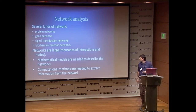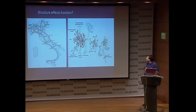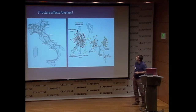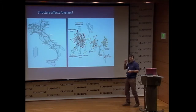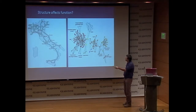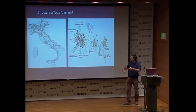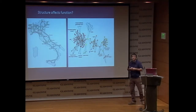Usually networks have thousands of interactions and nodes. Our point of view is that the structure affects the function of the network. Here you see a roadmap of Italy, and maybe you don't know anything about traffic jamming in Italy, but just looking at the map, you can see that maybe you can have a problem here, and you don't have a problem here, unless it is summer and everybody goes to the beach.